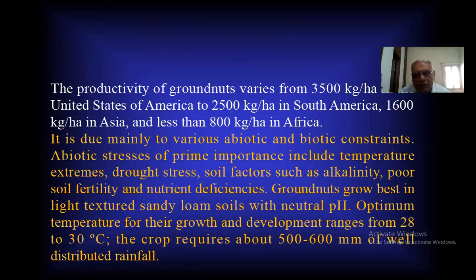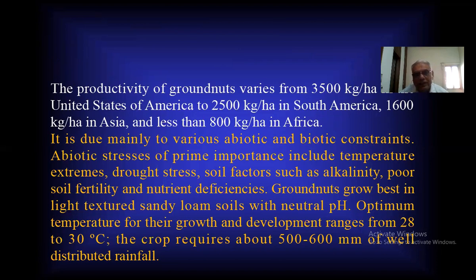The productivity of groundnut varies from 300–500 kg per hectare in the United States of America to 2500 kg per hectare in South America, 1600 kg per hectare in Asia, and less than 800 kg in Africa. In Asia, including India, we have about 1600 kg per hectare. The productivity of groundnut is low as compared to the United States at 3,500 kg.